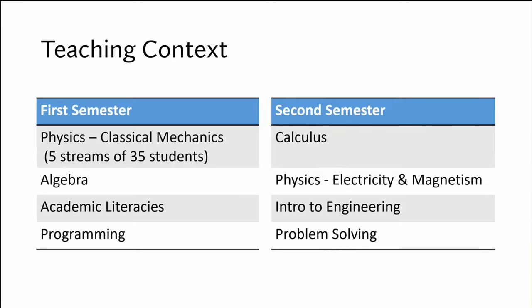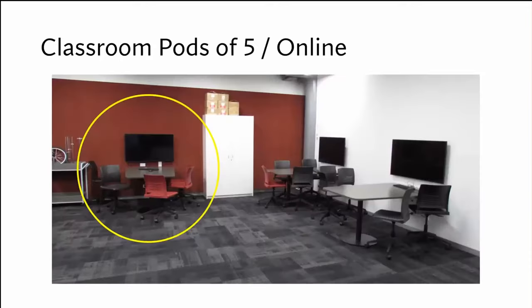Some teaching context for these classes: this is a bridging program sitting between high school and bachelor degree level — level four in New Zealand. In first semester students take physics, which is classical mechanics, or basically motion without calculus. They have some math alongside it, and then in second semester they have more math and physics. The goal is that they will move on to degree level — this timetable is for an engineering student.